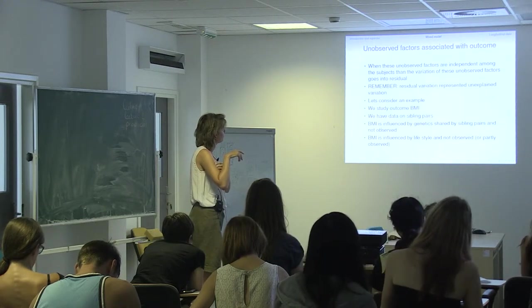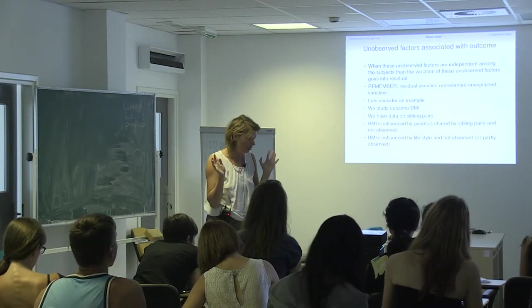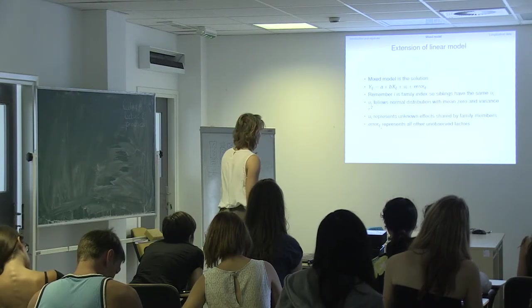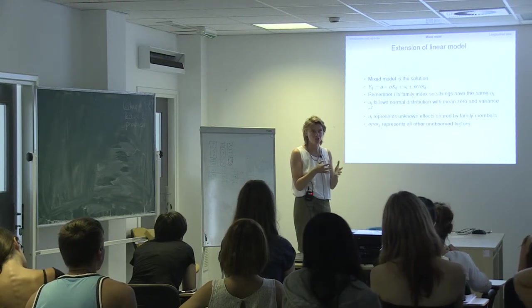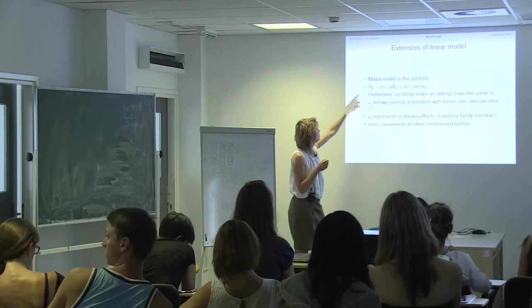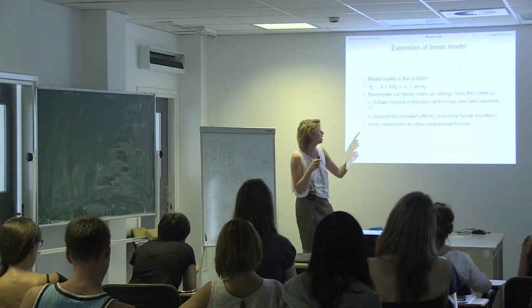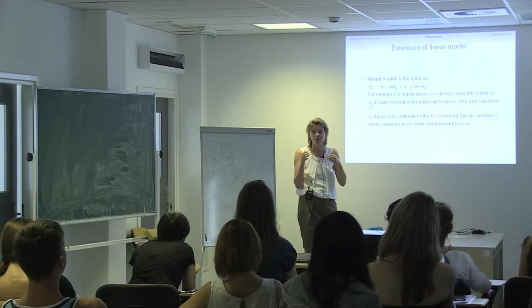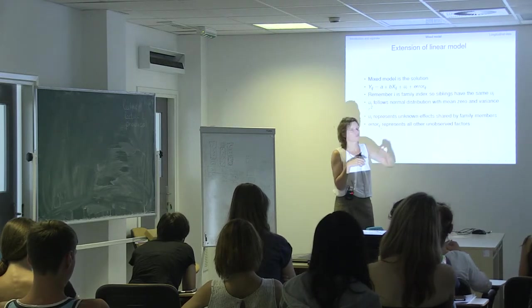The error term still represents the remaining unobserved factors. So this is the part we did not explain but gives correlation in the Y's. And this is the part of Y which we did not explain but is not shared by the sibling pairs. If we have the same Y's and the same X's but only one person per family, then we cannot estimate this U-I because we have no information about the clustering. It's just an independent factor, not shared or correlated over independent individuals — it's just modeled by the error term.